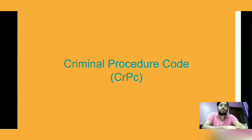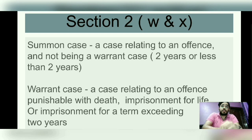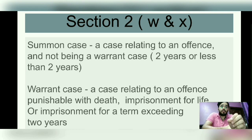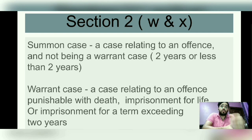Let's start with summon case and warrant case first. Section 2W defines summon cases — basically, it is the case in which the punishment is less than or up to 2 years. Section 2X states that warrant cases are cases relating to an offense punishable with death, imprisonment for life, or imprisonment for a term exceeding 2 years. So if the punishment is over 2 years, that is the warrant case, and if the punishment is up to 2 years, that is the summon case.